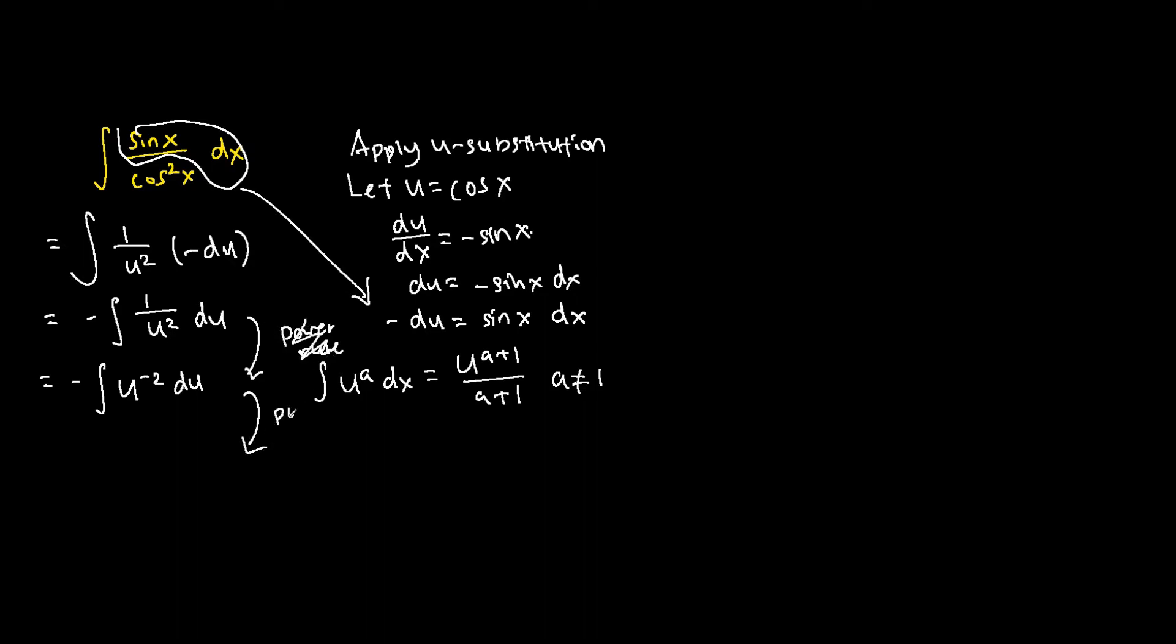So from here we apply the power rule. We let a be negative 2. So after we integrate u to the power of negative 2, du is equivalent to u to the negative 2 plus 1 over negative 2 plus 1, plus c.